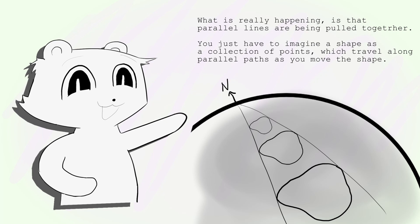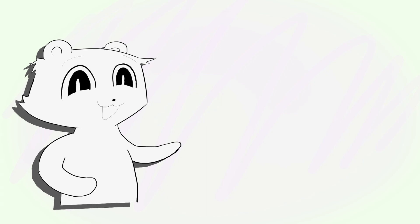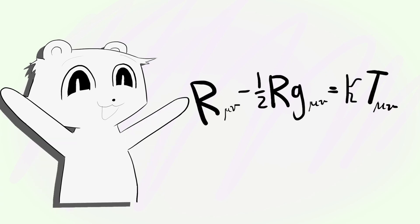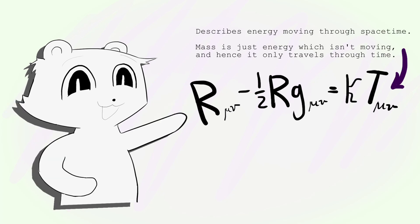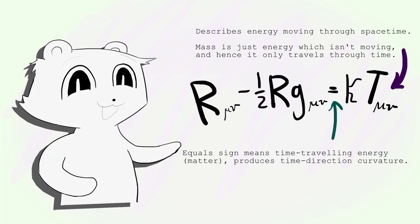Positive Ricci curvature in the north direction means a shape traveling north shrinks in area. Now that we understand what Ricci curvature is, let us have a good old revisit of general relativity. According to Einstein's field equation, stationary masses only create curvature in the time direction. It also says that positive masses will create positive curvature.